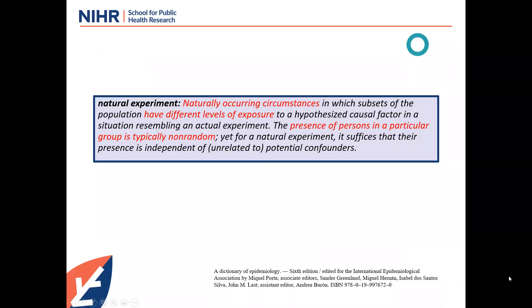Natural experiments and quasi-experiments are generally considered one of those other ideas. The dictionary of epidemiology describes naturally occurring circumstances where the population can be divided into different levels of exposure, and the presence of persons in a particular group is typically non-random — but for a natural experiment, it's enough that they're probably unrelated to potential confounders. That's the official definition, though we'll see it's not always used that way.